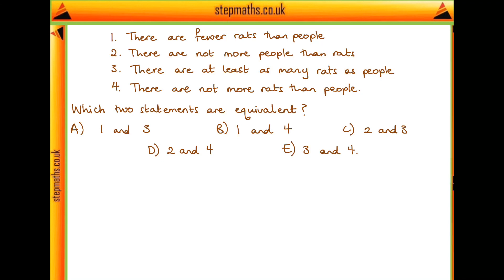Okay, so let's just go through these statements and let's try and write them in a simpler way so that it's easier to spot which are the same. So how can I write these in a simpler way? We could use inequalities. So if I say that r is the number of rats and p is the number of people,